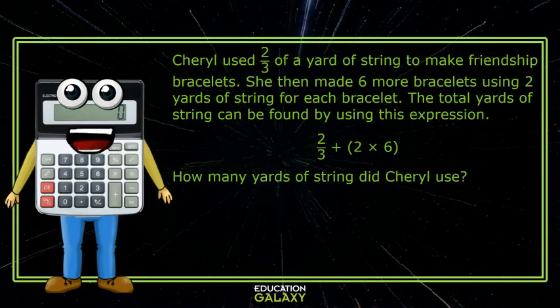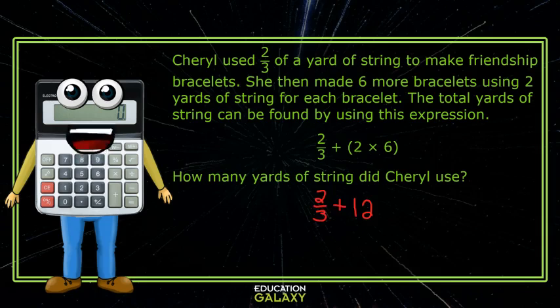Let's try one last problem. Cheryl used 2 thirds of a yard of string to make friendship bracelets. She then made 6 more bracelets using 2 yards of string for each bracelet. The total yards of string can be found by using this expression. To compute this problem, first we have to multiply 2 times 6, which gives us 12. Next, we need to add 2 thirds and 12, which gives us 12 and 2 thirds. So our answer is 12 and 2 thirds yards.